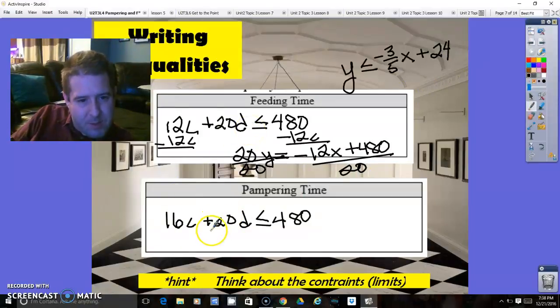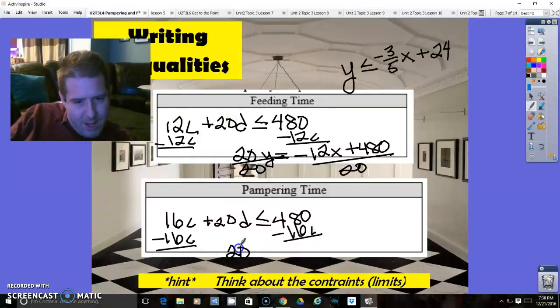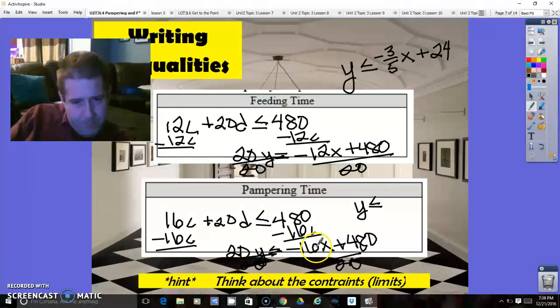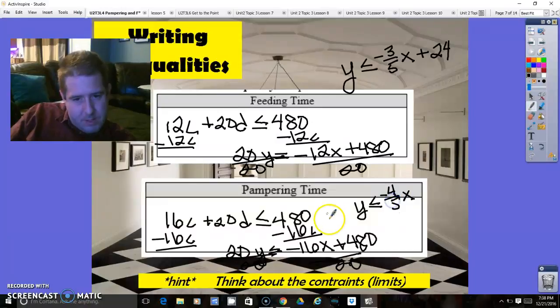Same thing for this one. If I'm changing standard form into slope-intercept form, I'm going to subtract 16c from both sides. That gives me 20y is less than or equal to negative 16x plus 480. Next thing I want to do is divide both sides by 20. And that gives me pampering time. It's going to be y is less than or equal to 16 over 20. That can be simplified to negative 4 over 5x plus 24 as well.